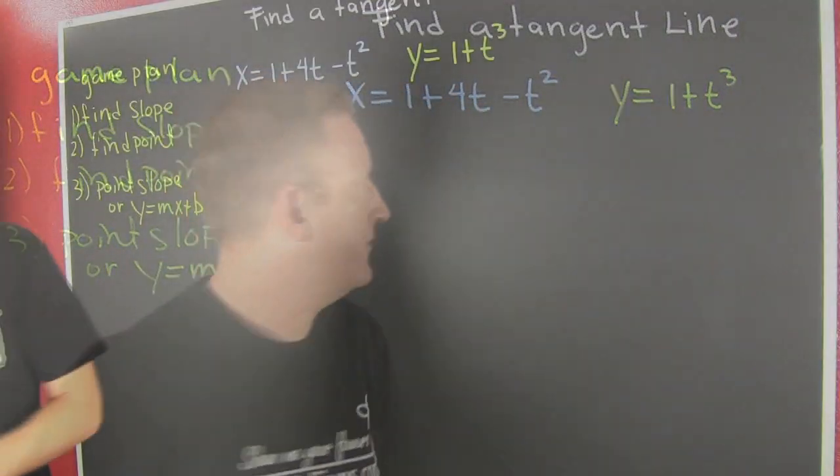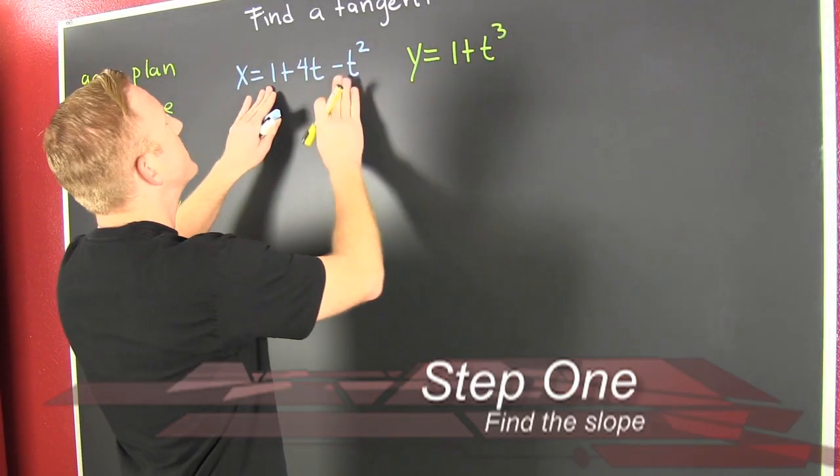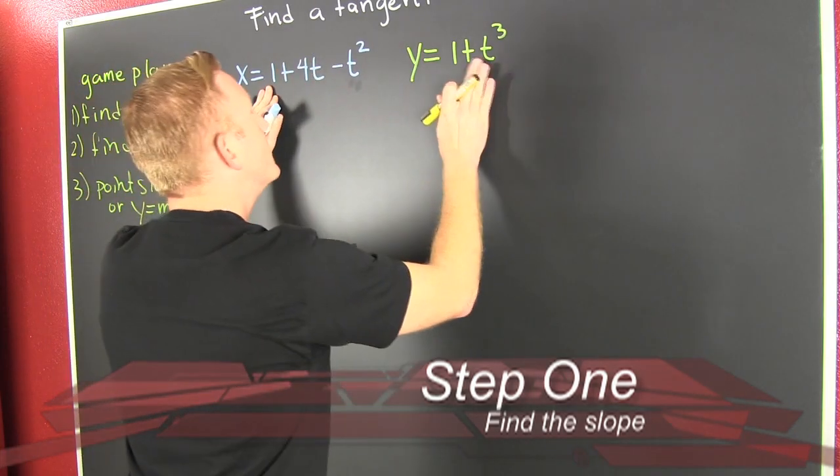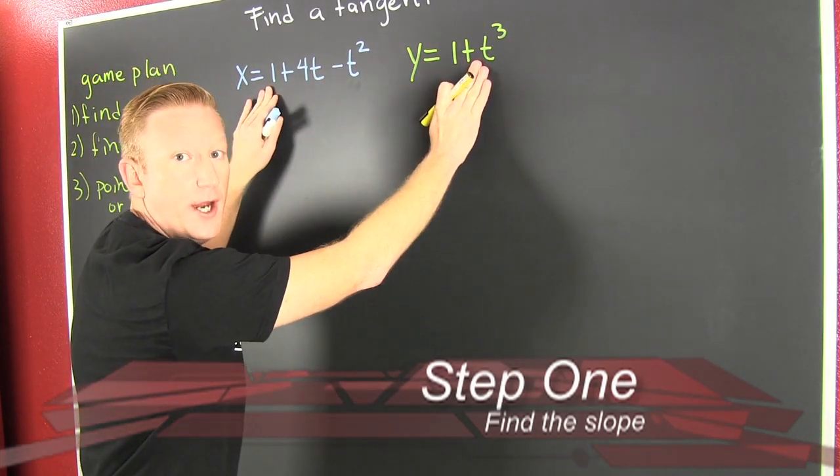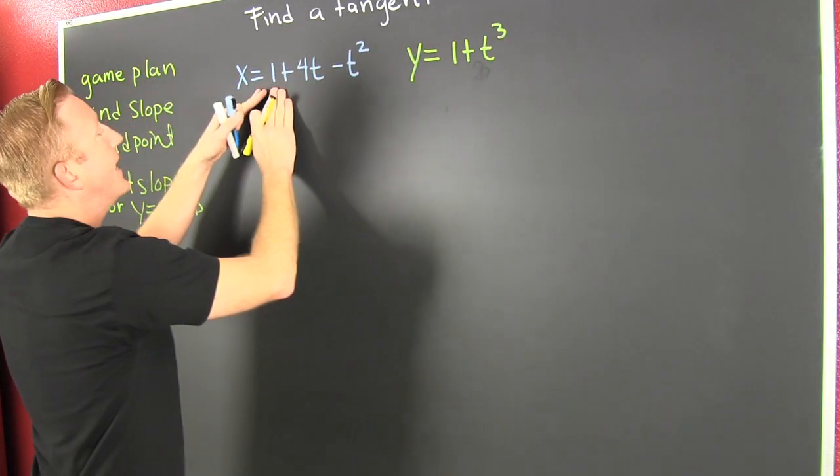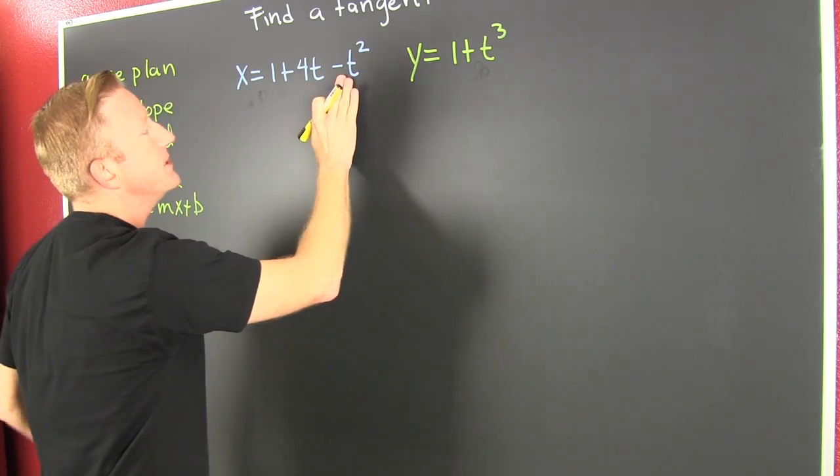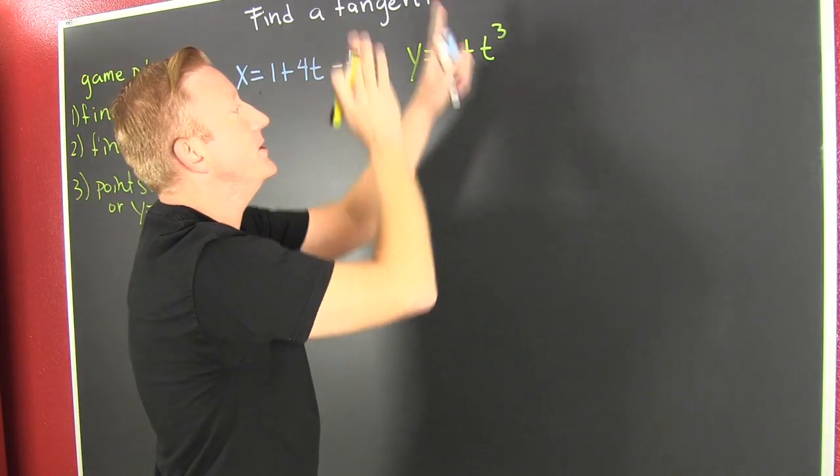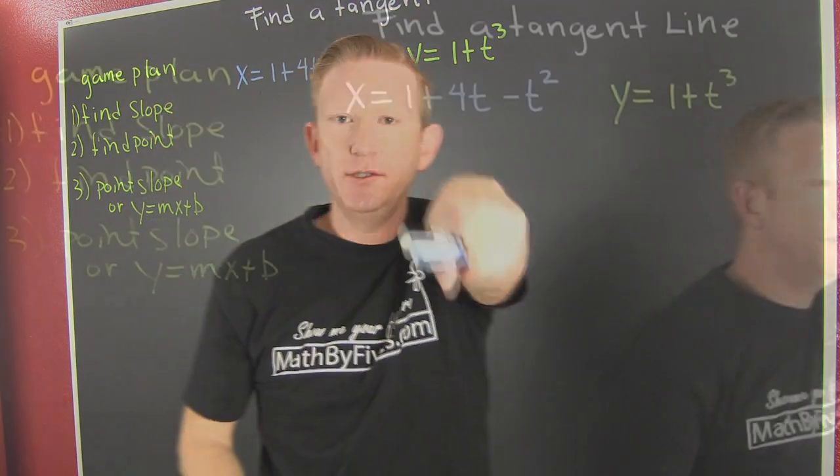First, we see the functions in question. x is governed by t, and y is governed by t. Here we see them parametrically. So then x is 1 plus 4t minus t squared. y is 1 plus t to the third.